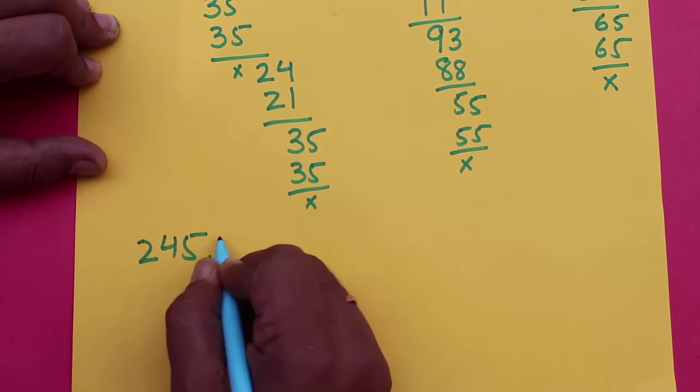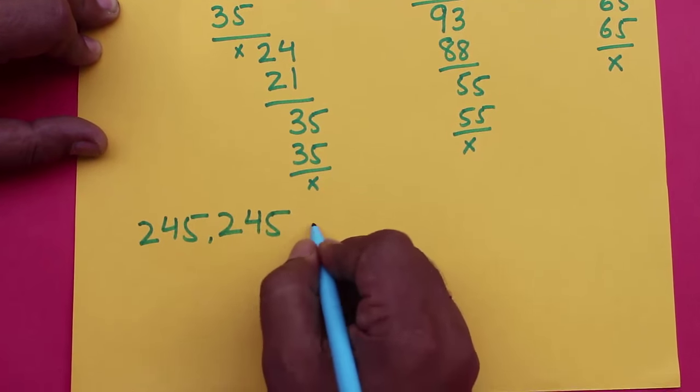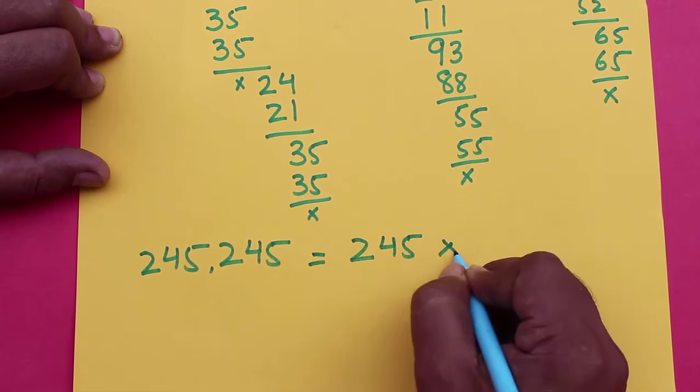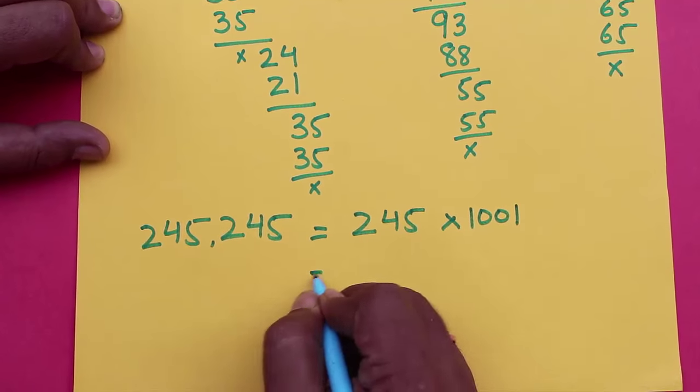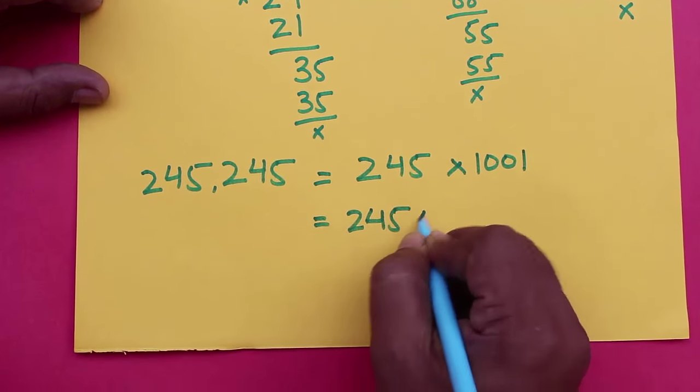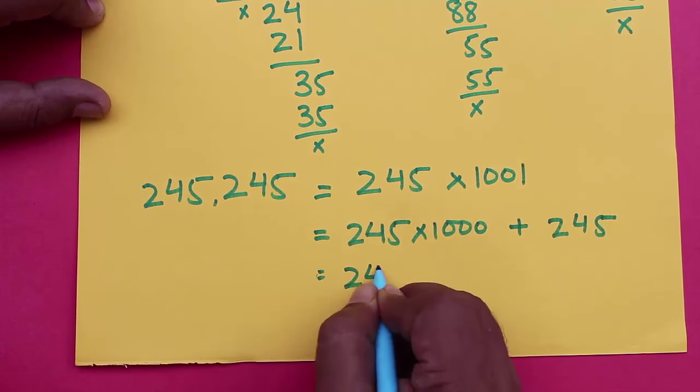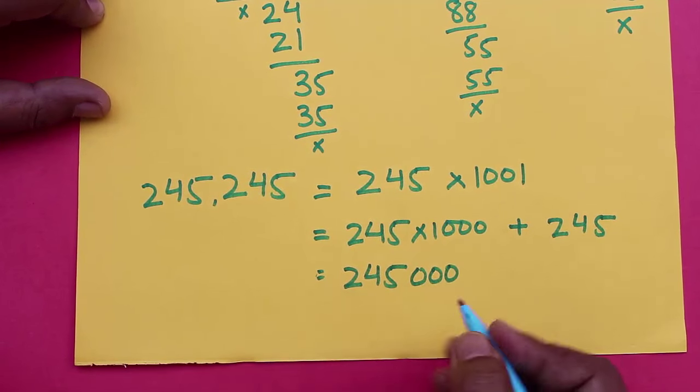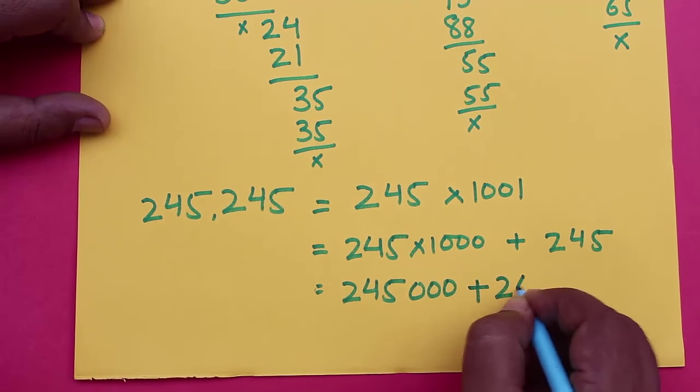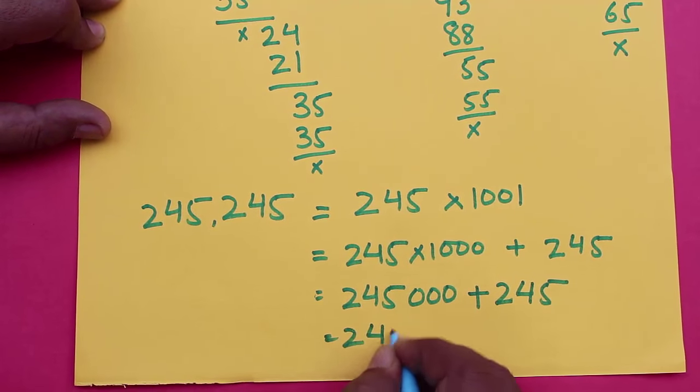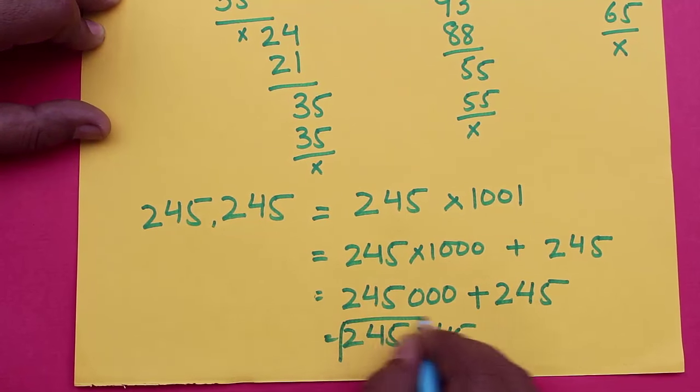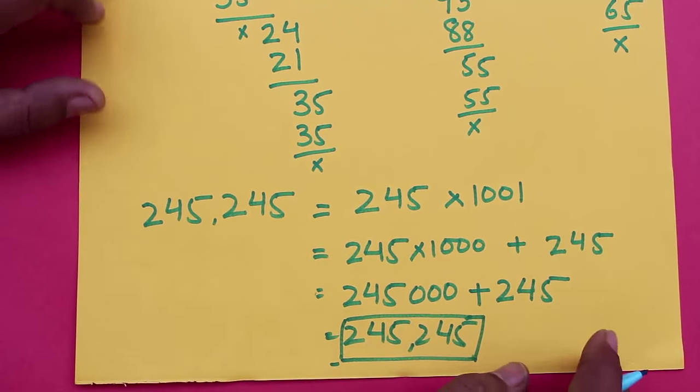First, we wrote the number 245 and then wrote it again by the side to get a six-digit number, 245245. However, when we multiply 245 by 1001, we will once again get 245245. Well, 245 times 1000 is 245000, and if we add 245 to it, we will get 245245.